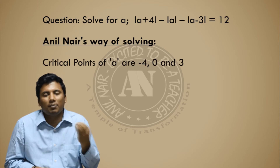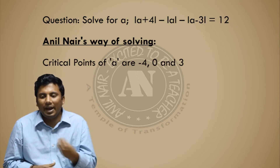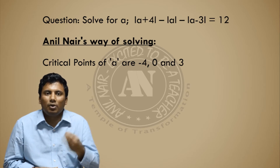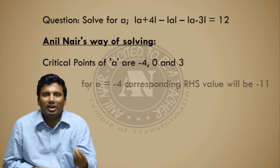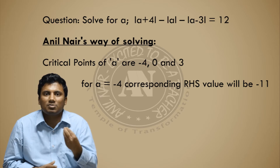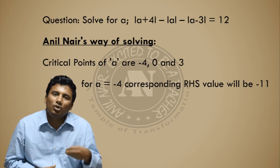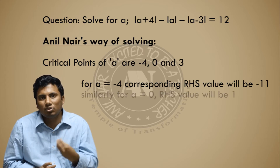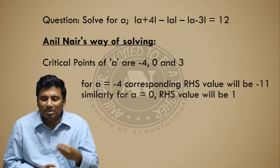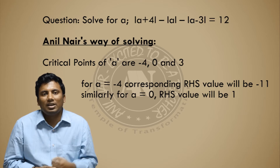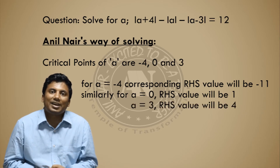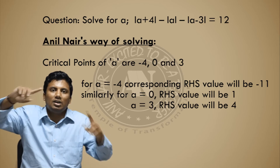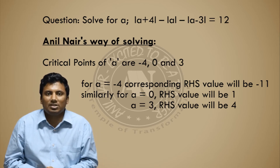Step 1: Find the critical points of a. In this question the critical points are minus 4, 0, and 3. Step 2: Put a equal to minus 4 in the equation — the corresponding right-hand side value you get is 11. Similarly, put a equal to 0 and you get 1. Put a equal to 3 and you get 4. Now draw a line connecting all these points.